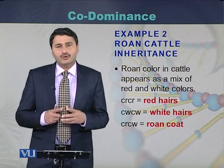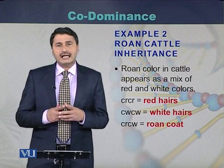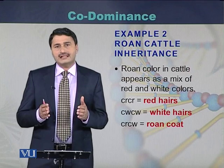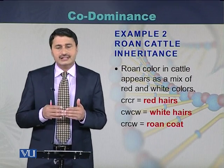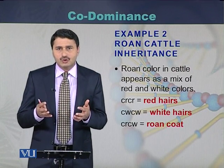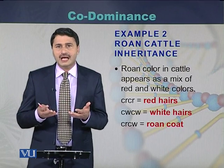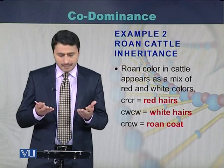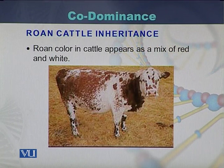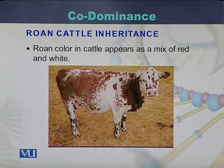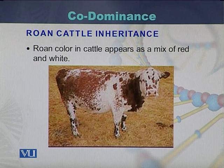There is another example of codominance seen in cattle. Some cattle have red hair and some have white hair. In a cross between red-haired cattle and white-haired cattle, an intermediate phenomenon is produced as a result of codominance. The offspring show a mix of red and white color known as roan color. This phenomenon of codominance is usually seen in cows and buffaloes.